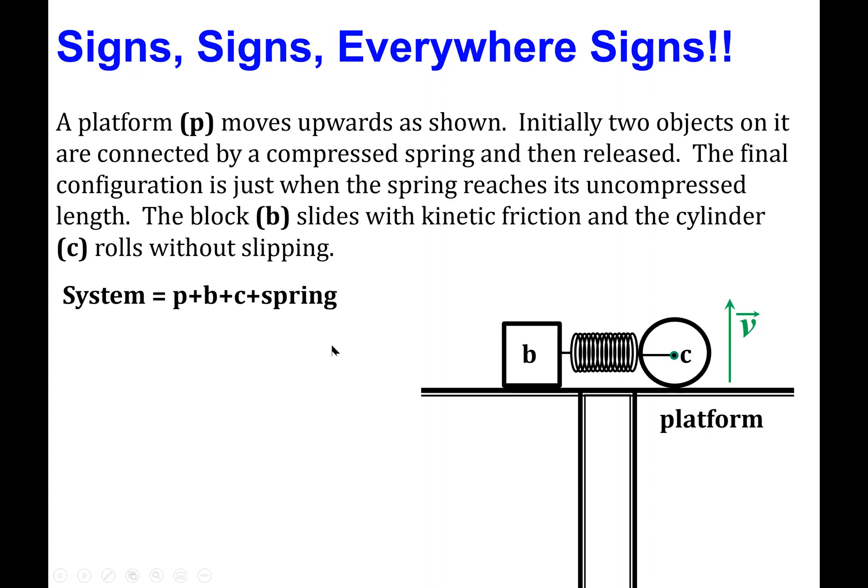So now we're in a position to ask questions. First, let's say that we begin with the block and the cylinder brought together very closely so that the spring is compressed, and then we let them go. Of course, the block will be pushed off to the left, the cylinder will roll off to the right, and the platform, as mentioned before, is moving upward at a constant speed.